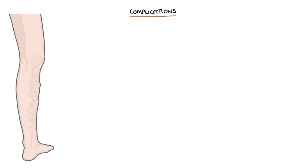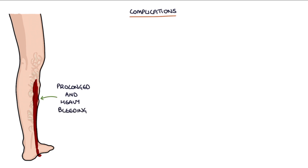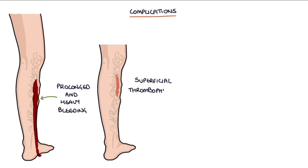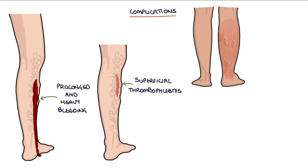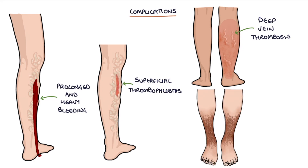Complications of varicose veins include prolonged and heavy bleeding after trauma, superficial thrombophlebitis — which is thrombosis and inflammation in the superficial veins — deep vein thrombosis, and all the issues associated with chronic venous insufficiency, such as skin changes and ulcers.